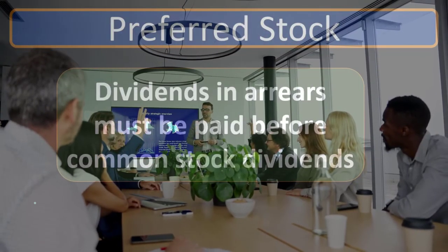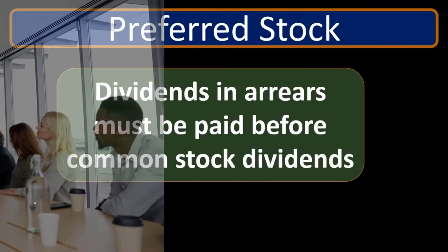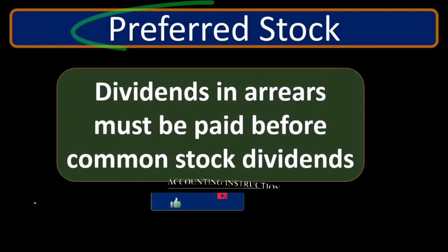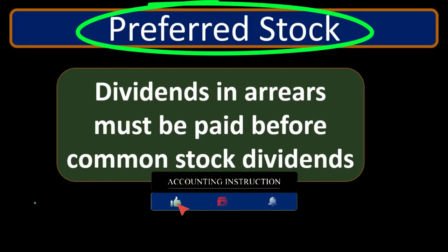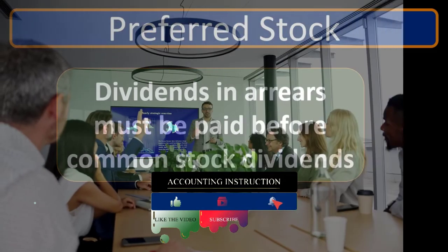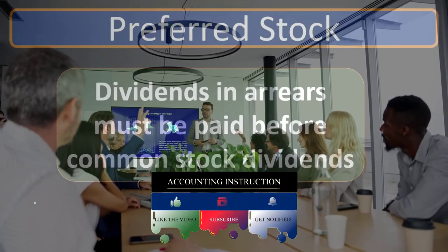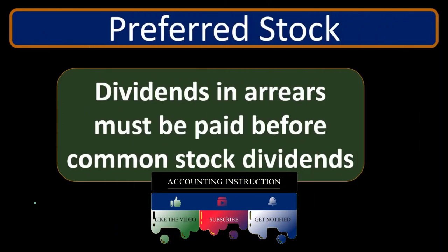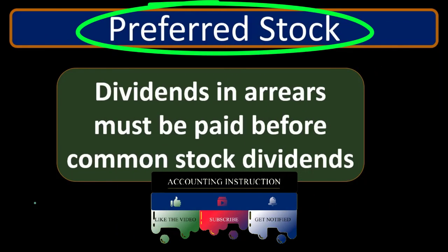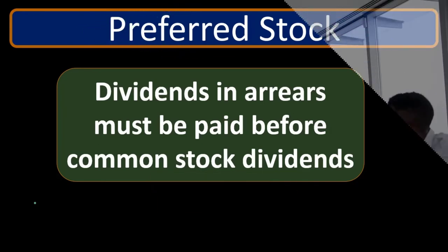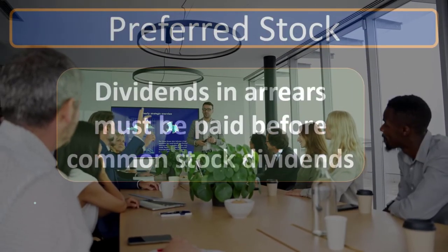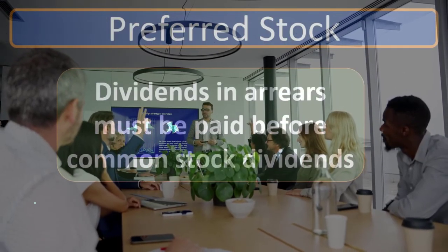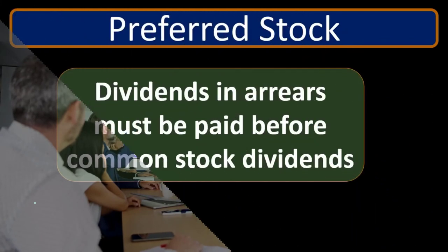Unlike common stock, preferred stock does not give shareholders voting influence over who is on the board of directors. Common stockholders have an indirect influence — they vote for the board of directors, who then hires management. With preferred stock, you don't even have that voting power that common stockholders have.